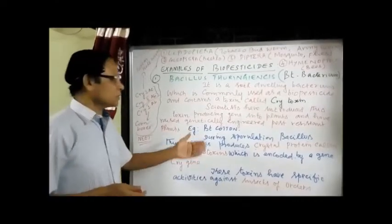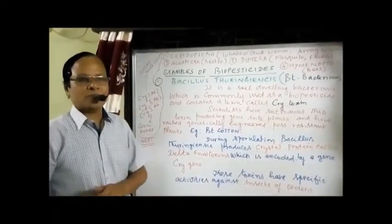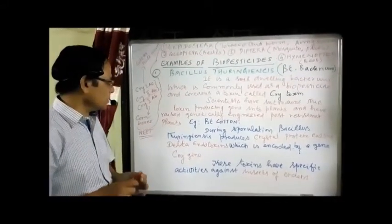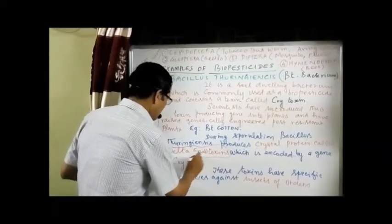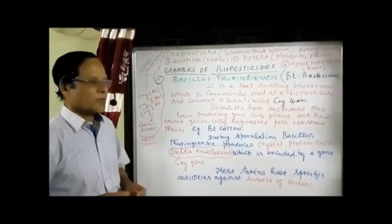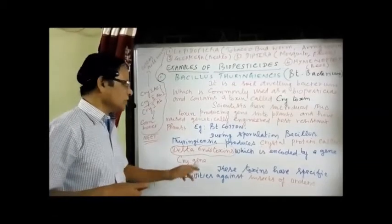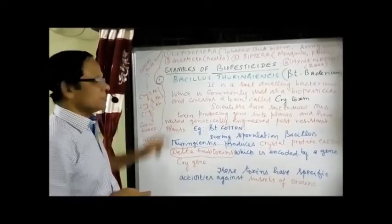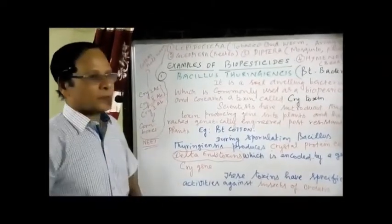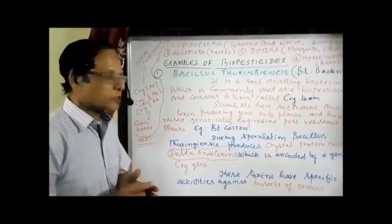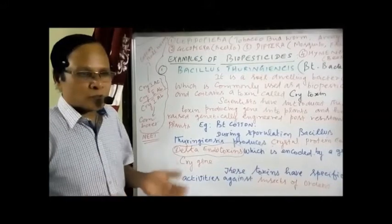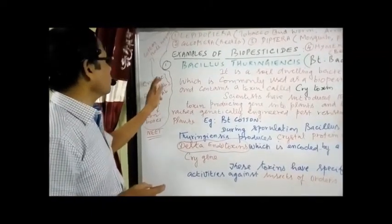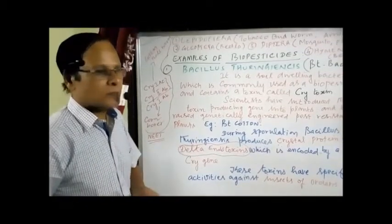During sporulation, this bacteria produces a crystal protein called delta endotoxin — a toxin poisonous to insects, produced under the control of the CRY gene. We have different types of CRY genes: CRY1AC and CRY2AB. These genes are responsible for the production of toxin that works against the cotton boll weevil, which produces abnormal cotton. CRY1AB encodes a protein toxin that kills the corn borer, which affects the yield of corn.